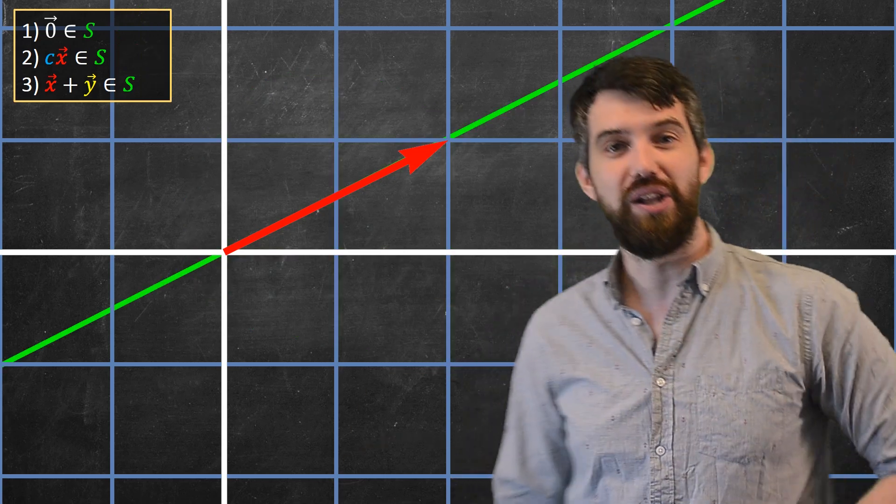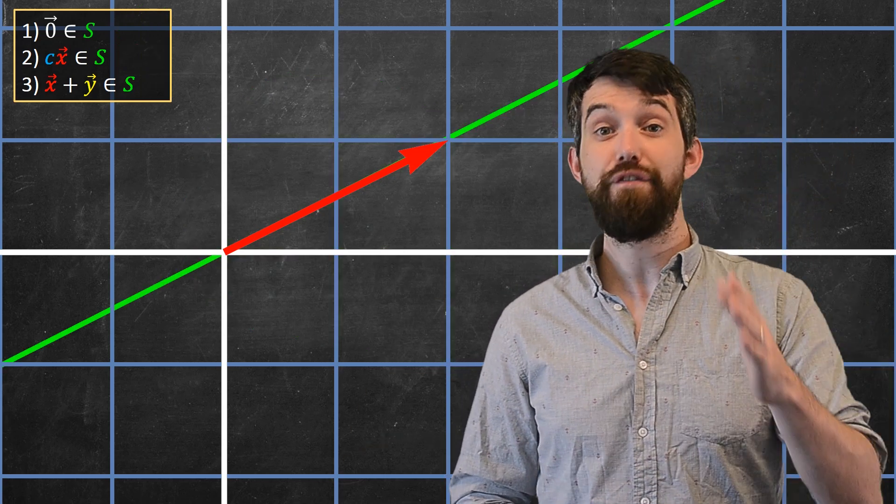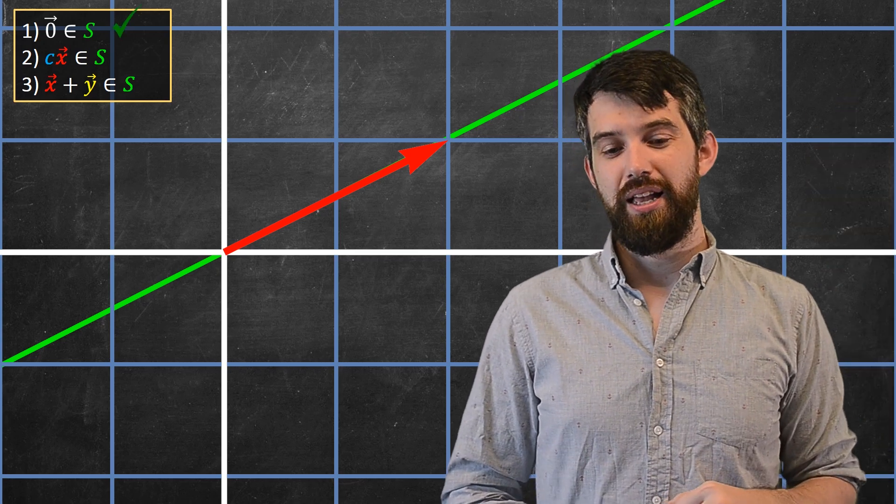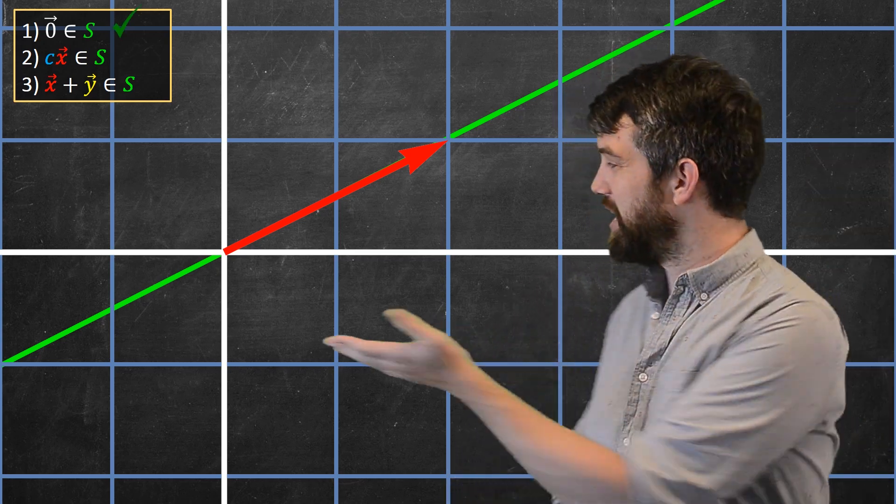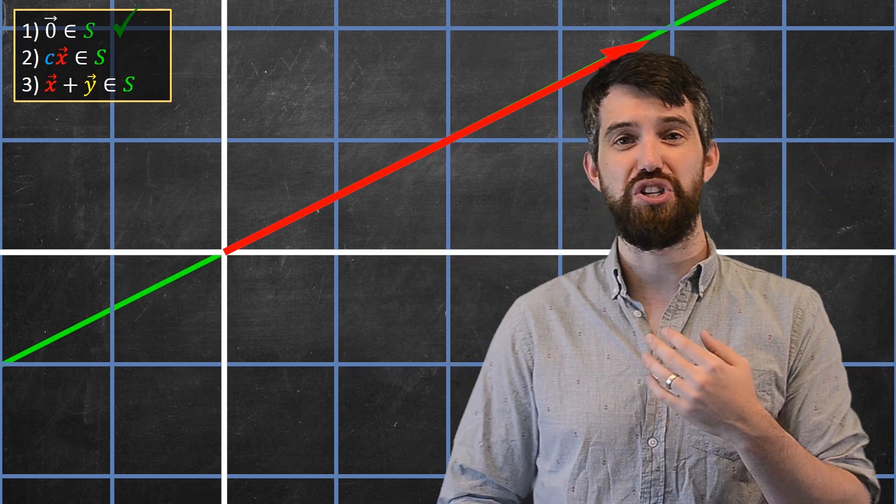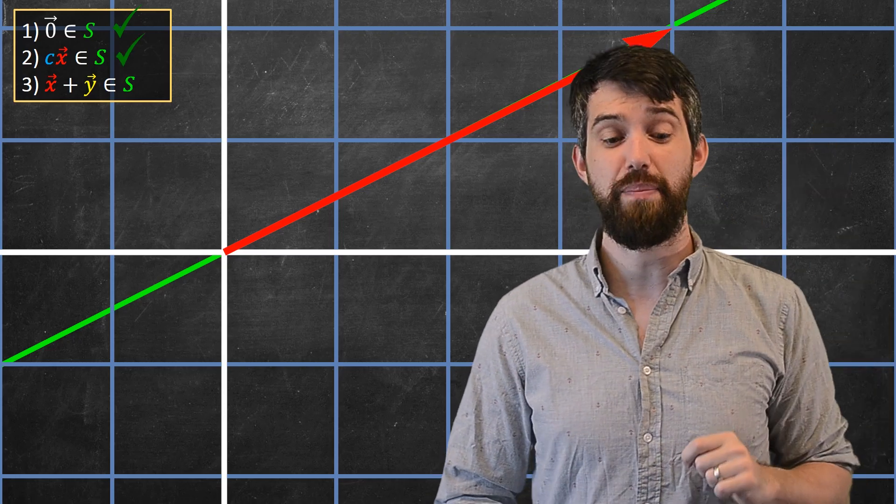Okay, I have my infinite line here. Wonderful. So zero vector's on that, that works. If I take this vector and I, say, multiply it by a factor of two, it's still on the line. So yep, that one works as well.